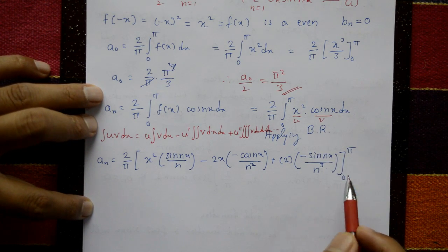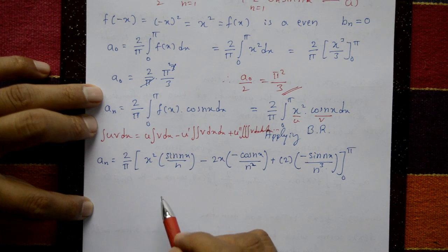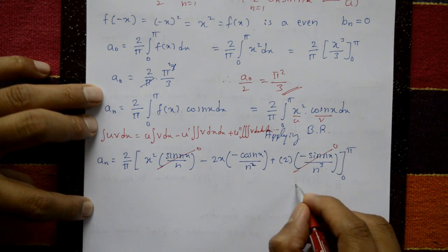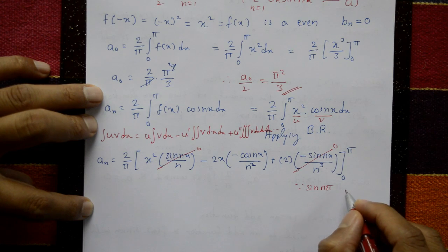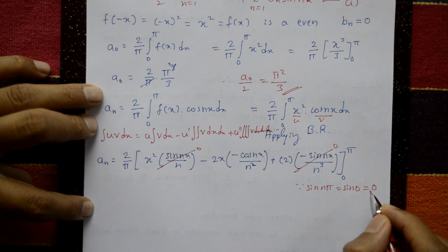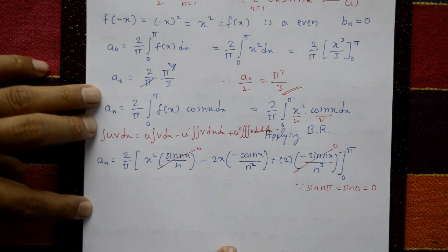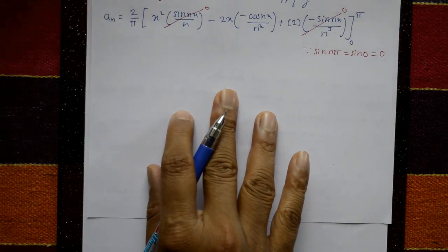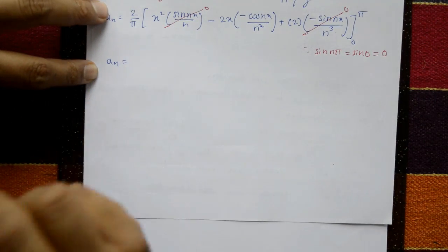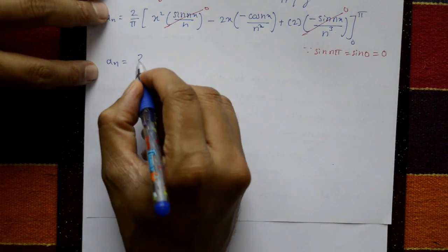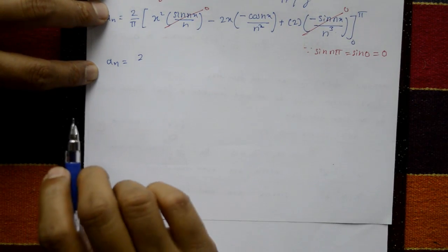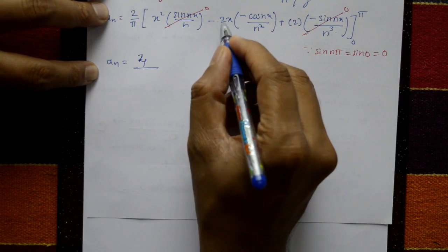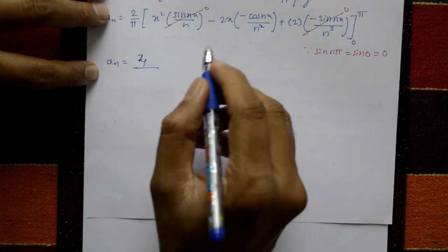Substituting the limits: the first and third terms contain sin(nπ) and sin(0), both of which are 0. Only the second term survives. After simplification, we get minus minus plus, giving 4, and combining factors of 2 gives 4/πn² times x·cos(nx) evaluated at the limits.